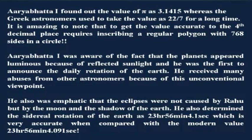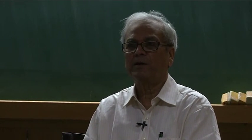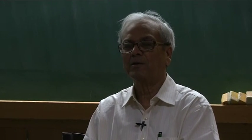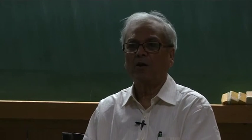Aryabhata was very emphatic that eclipses were not caused by Rahu but by the moon and the shadow of the Earth. He received lots of criticism - not only by later astronomers but even by followers like Brahmagupta and Varahamihira, who used very abusive language about him. Luckily India did not have the practice of burning people alive - otherwise he might have suffered the same fate as Giordano Bruno. His revolutionary ideas were rejected by subsequent astronomers for a very long time. In my opinion, Aryabhata I stands much higher compared to many others - they are all brilliant like Brahmagupta and Bhaskara, but nobody can match the merit of Aryabhata I.